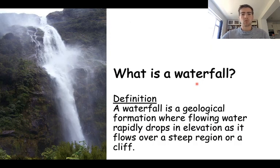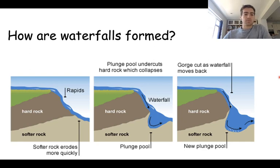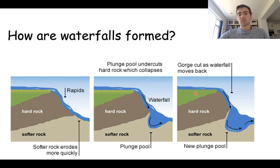The last one: waterfalls. So what is a waterfall? It is a geological formation where flowing water rapidly drops in elevation as it flows over a steep region or cliff. Waterfalls are formed when we've got an area of hard rock on top of an area of softer rock. Because of this hard rock, the water cannot erode downwards like it wants to, but eventually it will reach the end of the hard rock and be able to start eroding the soft rock below.